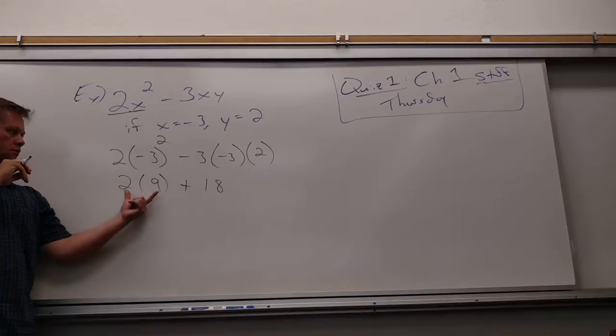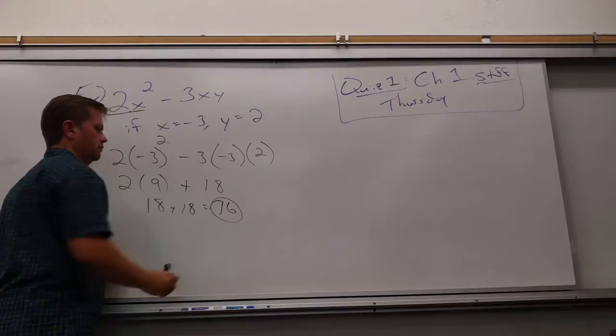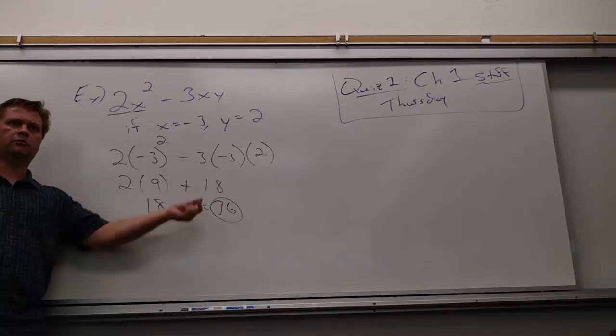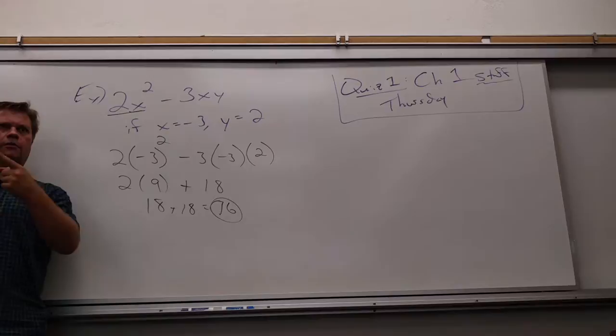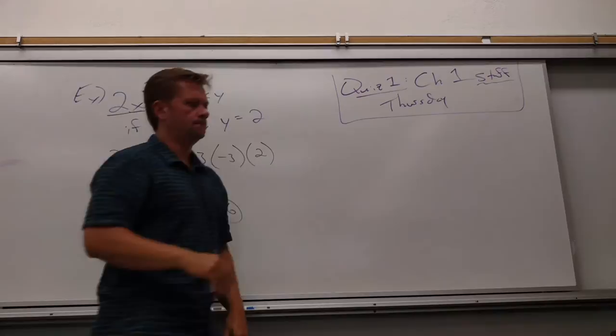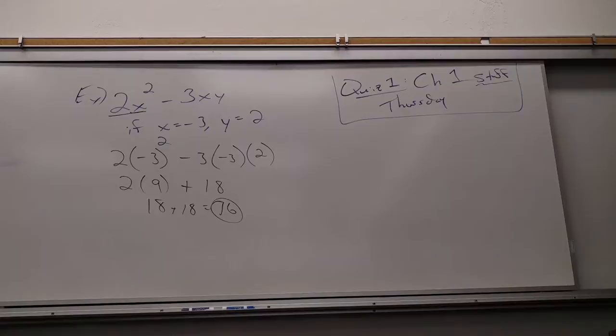18 plus 18 is 36. I wish I could take credit for those coming out to the same number, but I didn't plan that — it just happened. So that's a combination of understanding substitution and order of operations. That's pretty much where we left off last time.